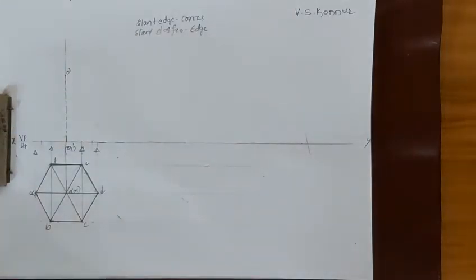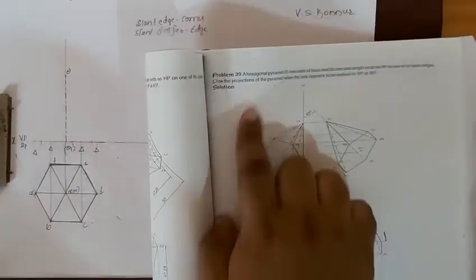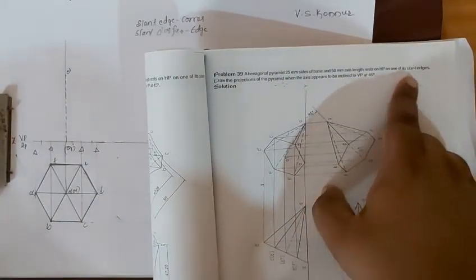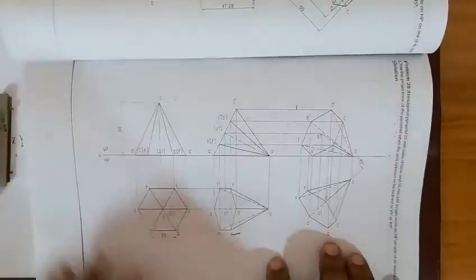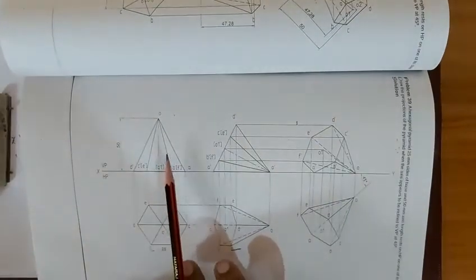Parallel No. 39: a Hexagonal Pyramid resting on one of its slant edges. A Hexagonal Pyramid, 25mm size, 50mm height, resting on one of its slant edges. In this, a 25mm hexagon base with 50mm height is the 1st position — the normal level drawing.